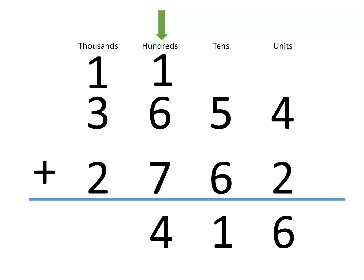The next step, we will add the thousands. 3 plus 1 plus 2 is 6. So, the sum of our two numbers is 6,416.